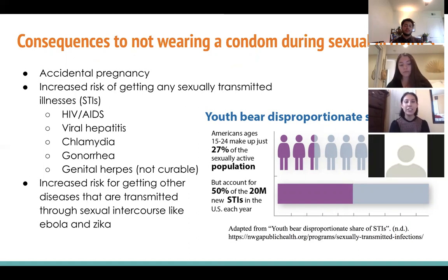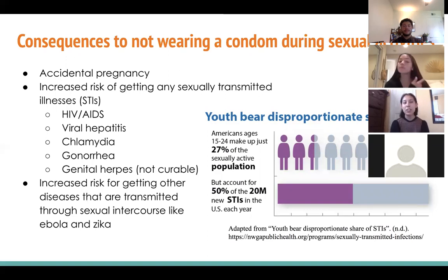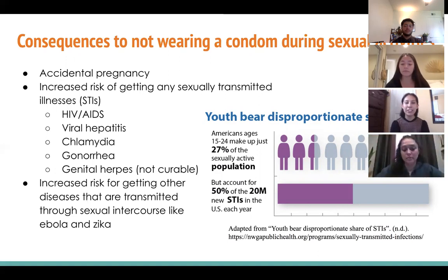STIs include HIV/AIDS, viral hepatitis, chlamydia, gonorrhea, and genital herpes, which are not curable. There is also increased risk for other diseases transmitted through sexual intercourse, like Ebola and Zika. Among Americans ages 15 to 24, this group makes up 27% of the sexually active population but accounts for at least 50% of new STIs gathered each year in the U.S.